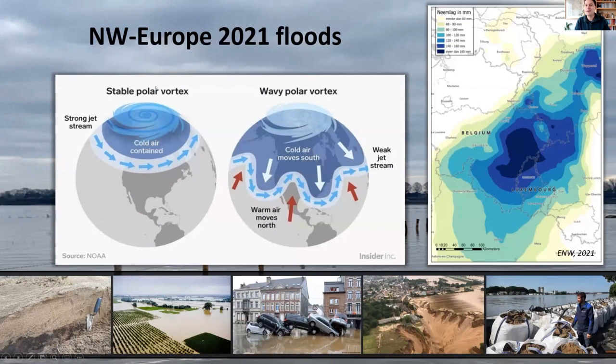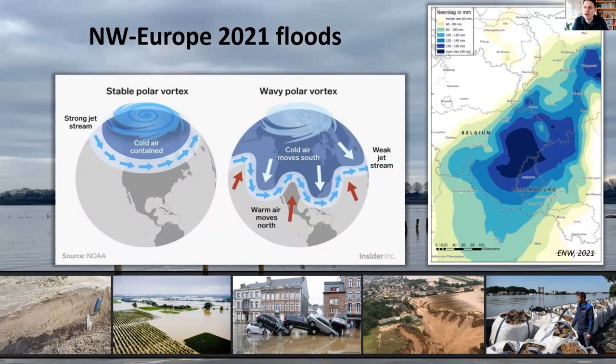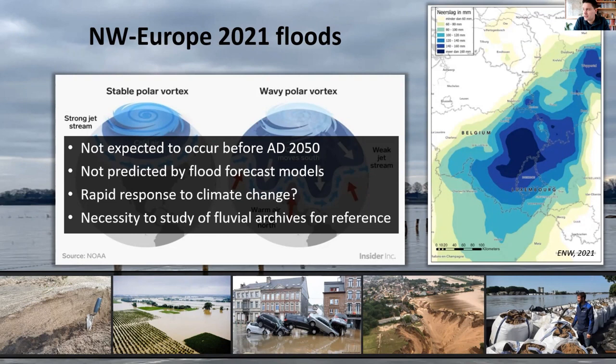The Meuse catchment was hit by severe flooding about one and a half years ago. What was expected before is that these types of floods wouldn't occur before the second half of the 21st century, and they were not predicted by our national forecast model. Questions have been raised: is this already a rapid response to climate change, and can we expect this more often in the near future? There is a necessity to study fluvial archives as references for periods of rapid climate change or warming in the past.